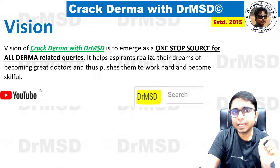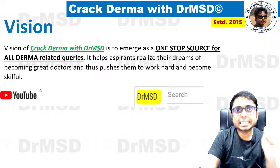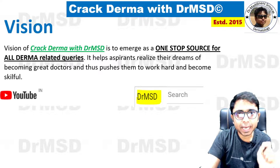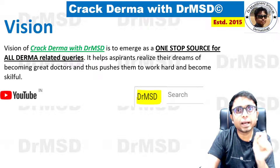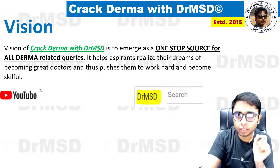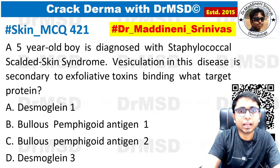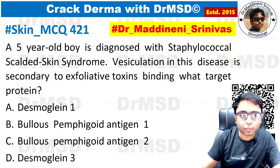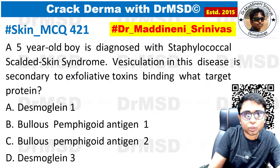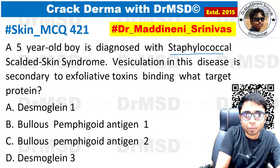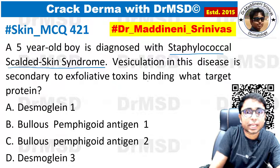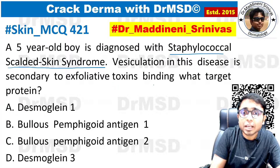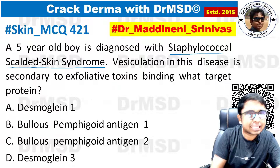For any help in dermatology, just type 'drmsd' followed by the dermatology topic you want in YouTube for a detailed explanation. Today's question: a five-year-old boy is diagnosed with staphylococcal scalded skin syndrome. Vesiculation in this disease is secondary to exfoliative toxins binding — which target protein?